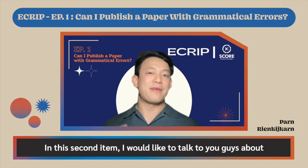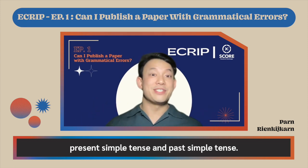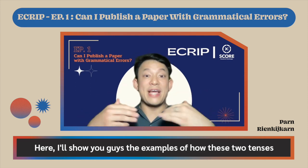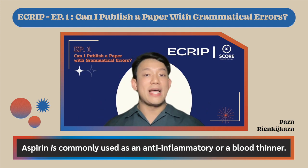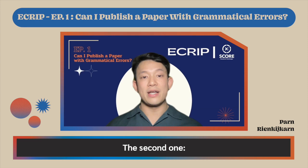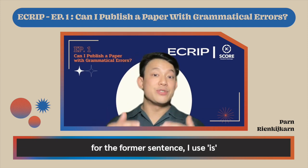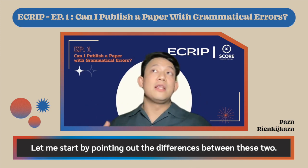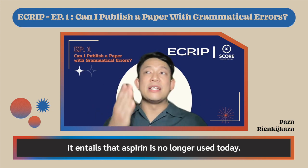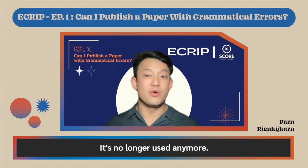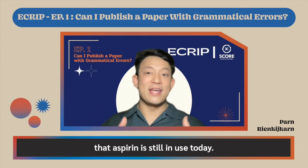Let's move on to our second item: tenses. There are mainly two tenses used in writing an academic paper — present simple tense and past simple tense. For example: 'Aspirin is commonly used as an anti-inflammatory or a blood thinner' versus 'Aspirin was commonly used as an anti-inflammatory or a blood thinner.' When I use 'was commonly used,' it means aspirin is no longer used today — it's a past event. Whereas using 'is,' present simple tense, means I state it as a fact that aspirin is still in use today and the information is still valid.